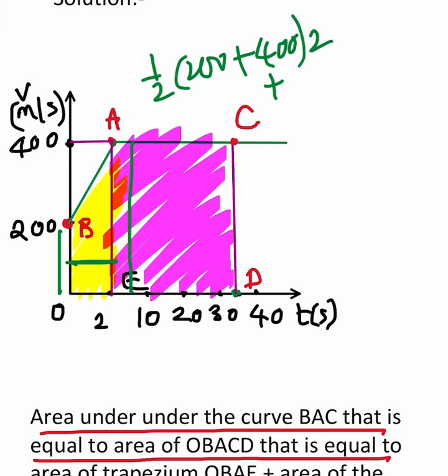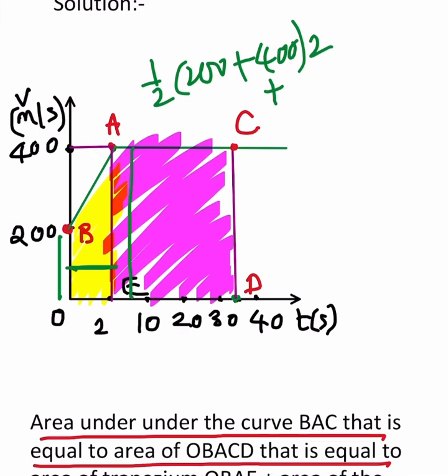Here I have taken AC as 30.5 minus 2, because up to here it is 30.5 minus 2, into 400. The height is 400.